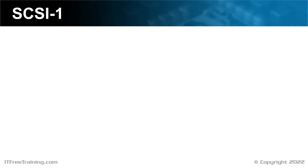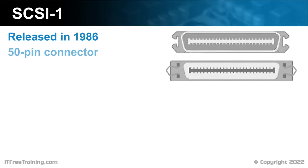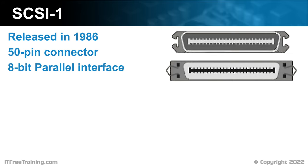To start with, I will have a look at SCSI 1, first released in 1986. For the CompTIA A-Plus exam, you won't need to know a lot about SCSI. I will do an overview of SCSI simply to give you a starting point, so you know where to look if you have to support an old SCSI system. SCSI 1 uses a 50-pin connector. The connector was quite large by today's standards, but was very durable. This version of SCSI uses an 8-bit parallel interface, which means it can transfer 8 bits of data at once. The original version of SCSI signaling was called single-ended, or SE.